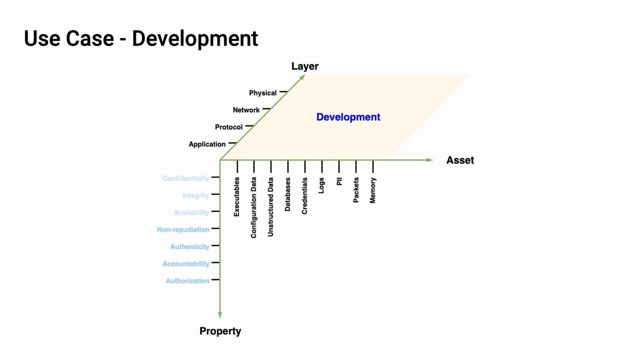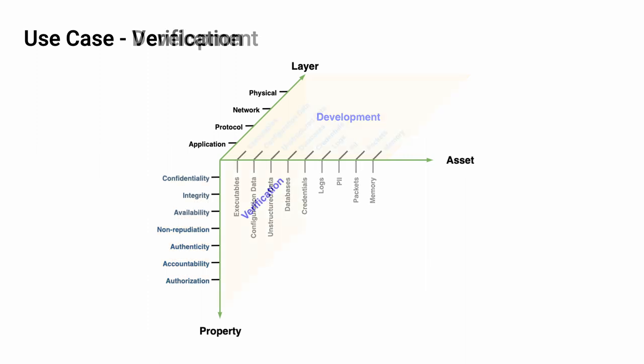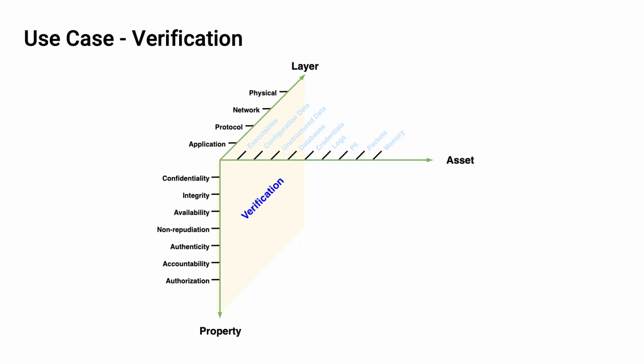Similarly, when you think about the development use case, developers are concerned with the combination of asset and layer, because what they're doing is applying a requirement. They need to know where within the layered construct of the system the cybersecurity control needs to be applied, and what asset it needs to be applied to. Finally, let's consider verification. Verification thinks about attempting to either confirm or subvert a cybersecurity property at a particular layer within the structure.